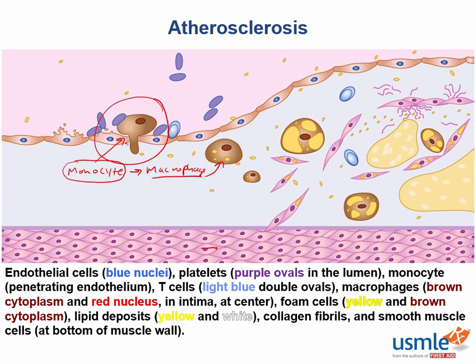Bringing in the macrophages is a protective mechanism because they will phagocytose the oxidized LDL to prevent more endothelial cell damage. The only problem is the macrophages cannot do anything with this oxidized LDL after they eat it. So the phagocytized LDL accumulates within the macrophage, creating what's called a foam cell. Eventually, these foam cells will explode, releasing large amounts of lipid, proteases, as well as inflammatory cytokines into the intima.